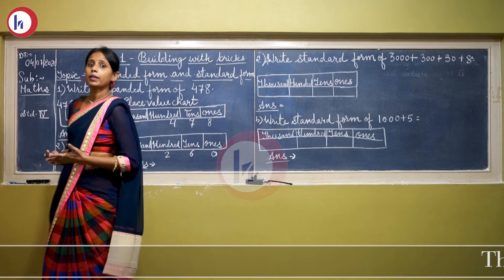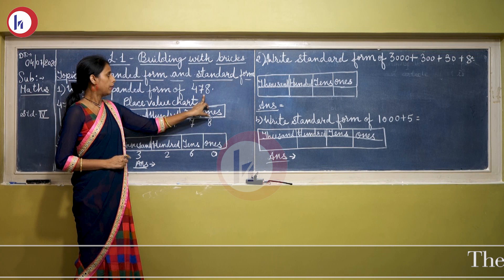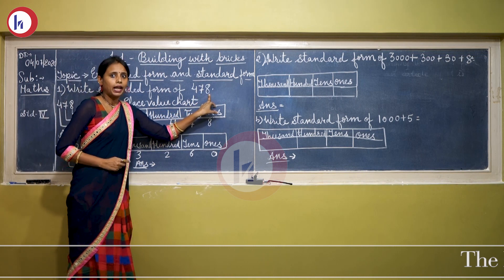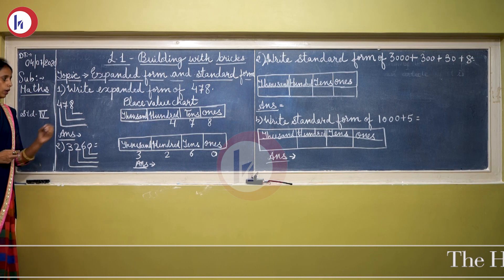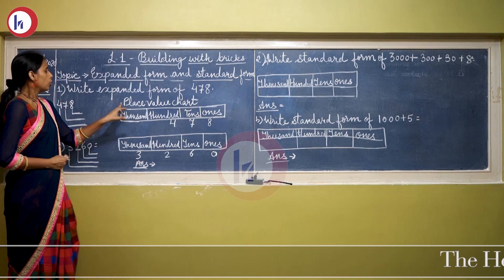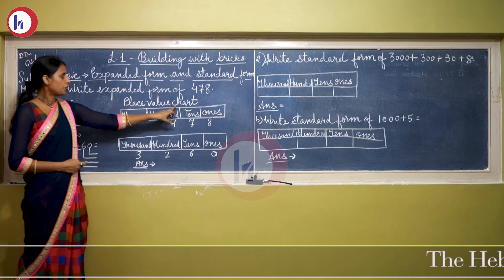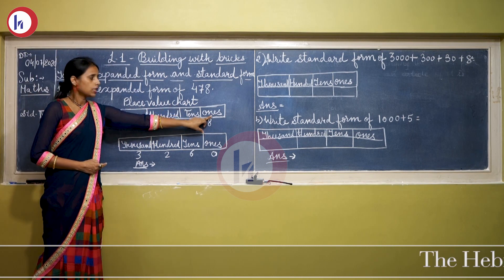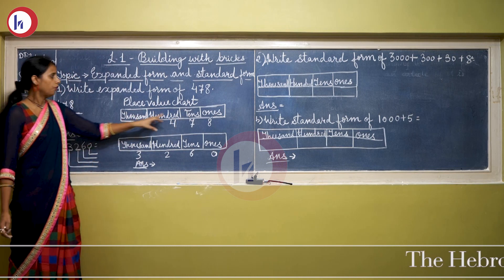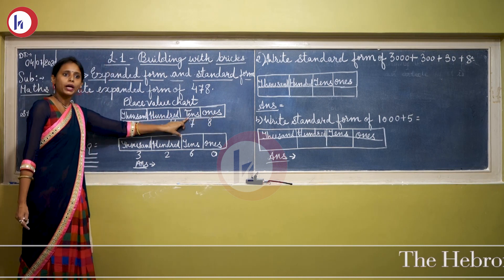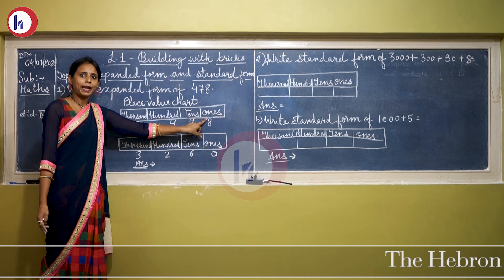So how can we write the expanded form of any given number? Here is the number 4708 and we have to write the expanded form. The first step is to show the place value chart. Here is the place value chart. The first place is ones, then tens, hundreds, and thousands. As we move from one place to another, the digit gets multiplied by ten.